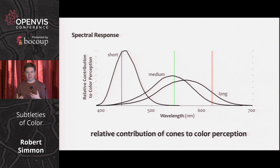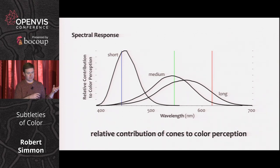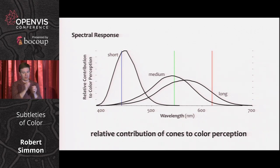This is the basic spectral response of the cones, which are the color-sensitive cells in our retinas. This shows a relative contribution - it's assumed that the three types of cones contribute equally to our color perception. You can see that these are all different shapes, different widths and heights, and that they're all much broader than the three very narrow frequency bands you would get from a monitor - the red, green, and blue primaries in an additive color space.